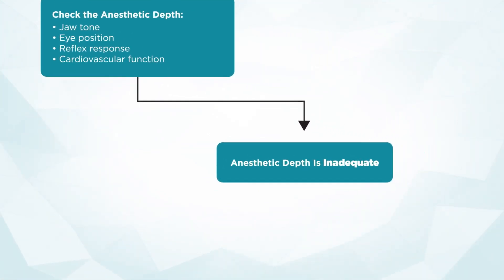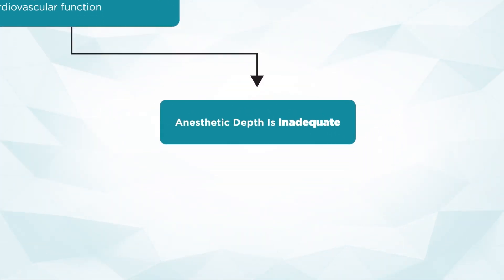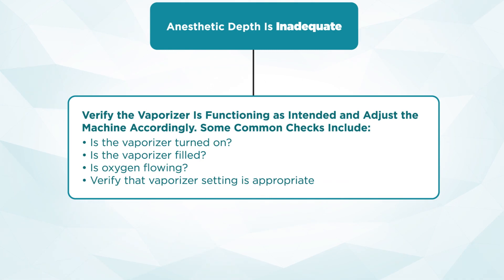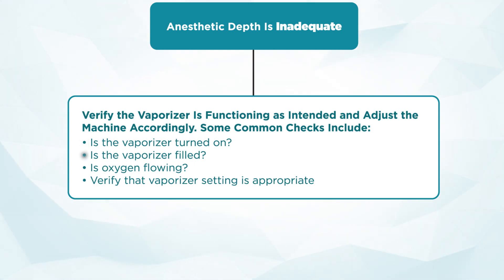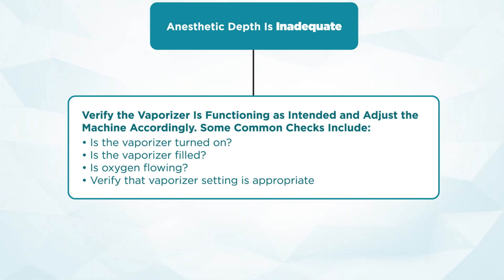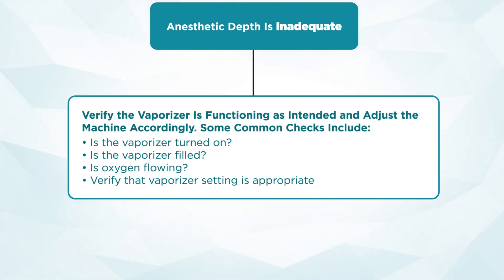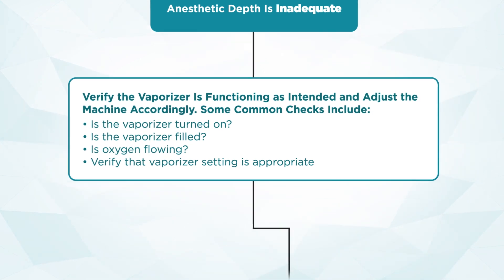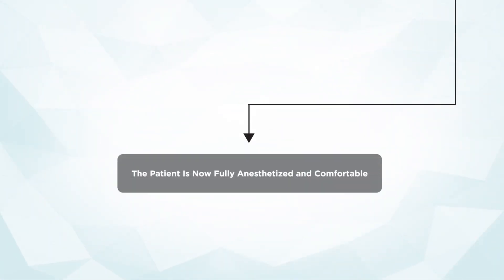If anesthetic depth is deemed to be inadequate, we're going to want to verify that our equipment is working appropriately — that our vaporizer is functioning as intended, that it is turned on, that we have the vaporizer filled with our appropriate anesthetic agent, and that oxygen is flowing and thus delivering vaporized agent to the patient. Once we've verified that these pieces are working, we want to make sure our vaporizer setting is appropriate for the patient's level of anesthetic depth. We should then arrive at a patient who is now fully anesthetized and comfortable.